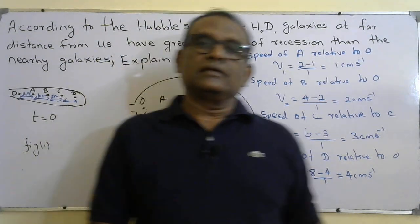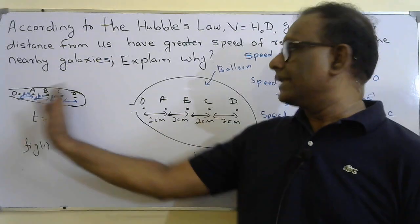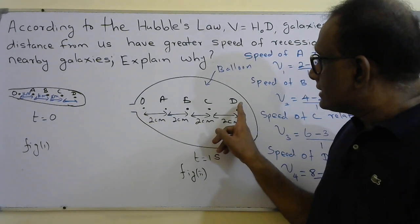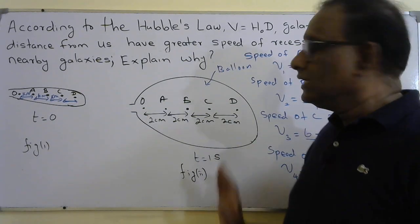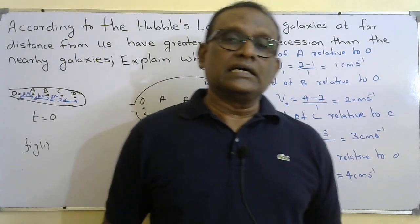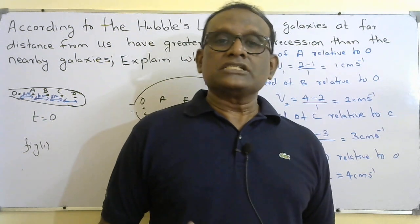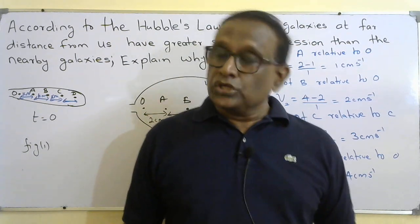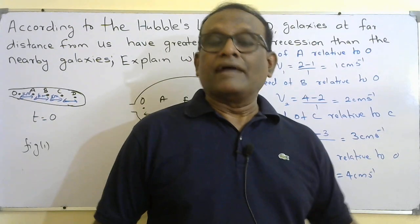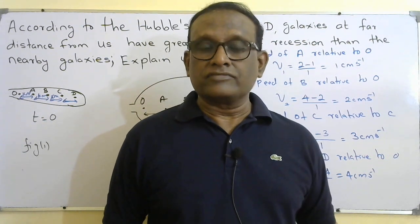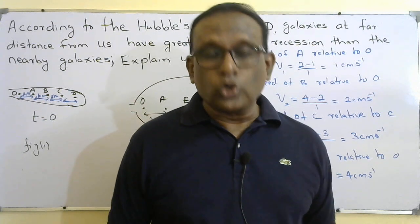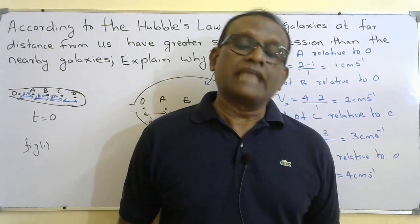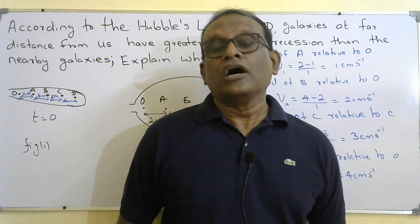So how do we explain Hubble's law using this analogy? More material between the observer and a far distance point means more stretch, so the speed appears to increase. Similarly, when the distance of a galaxy increases, the region between us and that far galaxy consists of a larger fabric of space. When there is larger fabric of space, the amount of stretch is more, causing the increase in the apparent speed of recession of the galaxy.